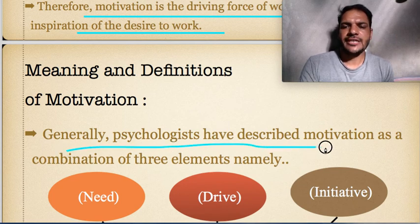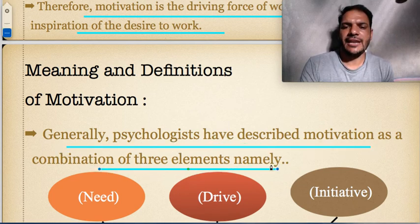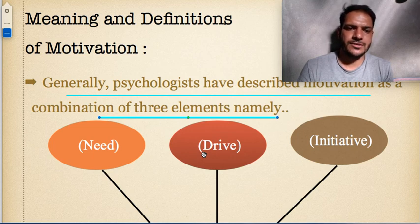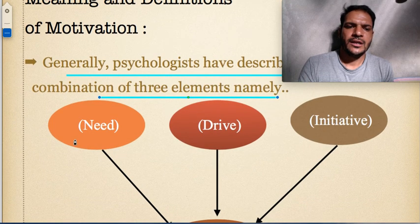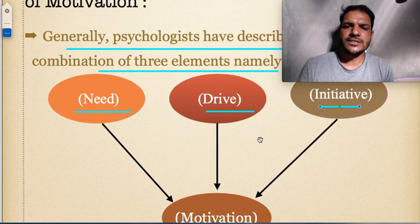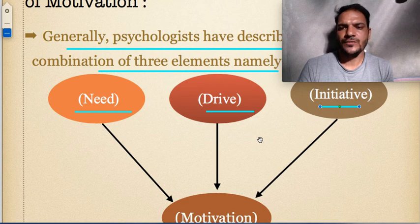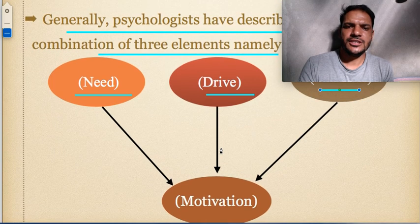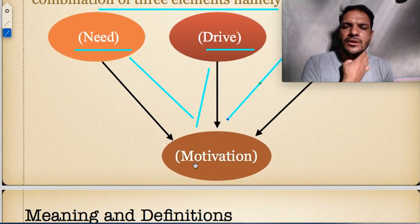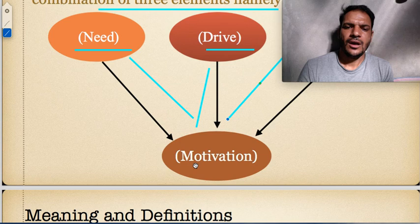Psychologists have described motivation as a combination of three elements: needs, drive, and initiative. These three words together create the concept of motivation. As shown in the diagram, needs, drive, and initiative are the components that combine to form motivation.